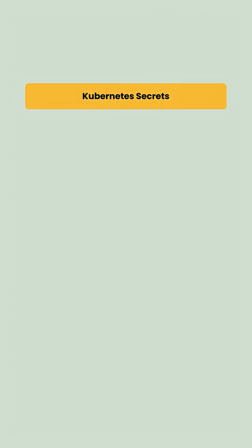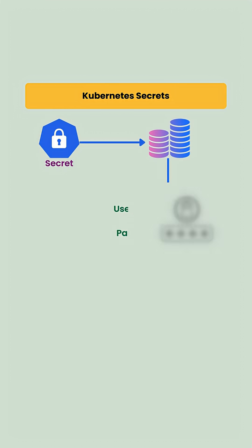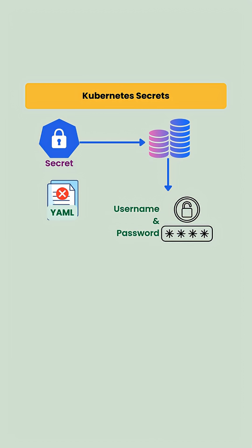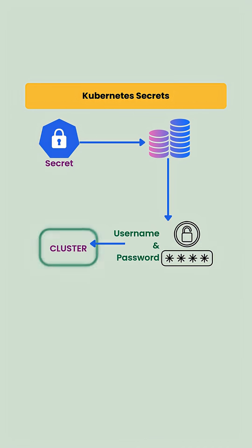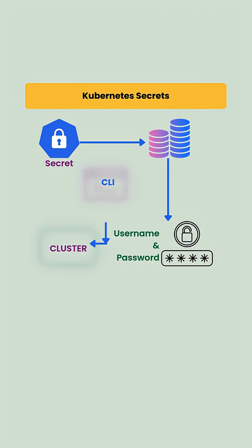So first we would use a Kubernetes Secret to store the database username and password, but we would not create a secret yaml with real credentials and push it to git, because that would expose the secrets. Instead, the secret is created directly in the cluster, usually from CICD or CLI, so credentials never touch git.